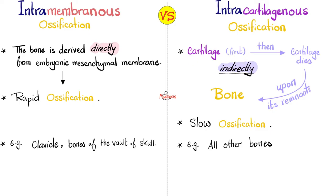Intracartilaginous is different. First, you have to make a cartilage from mesoderm, and then the cartilage will die. Upon the remnants of that cartilage, you will lay down your bone. So it's an indirect process, versus intramembranous which is direct. And since intracartilaginous is indirect, it's going to take longer. This happens in most bones of your body, especially long bones.